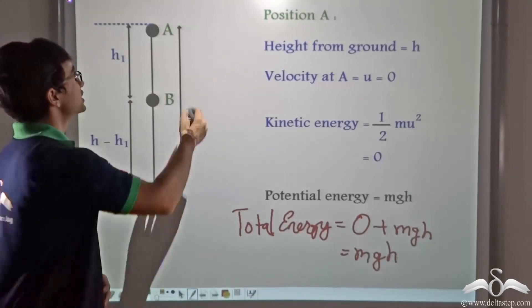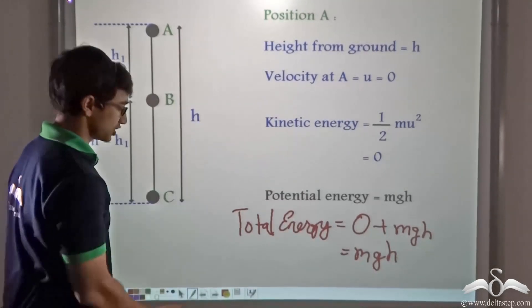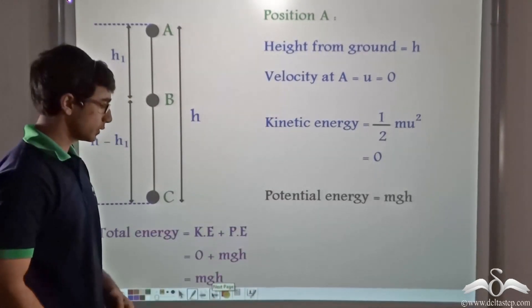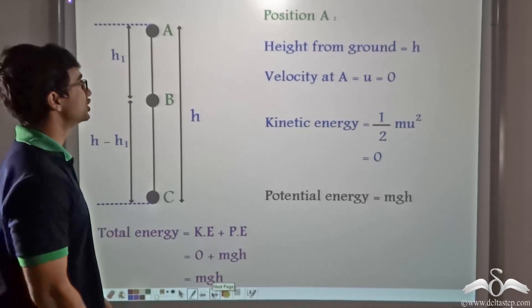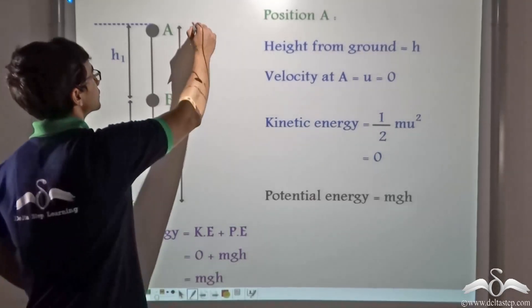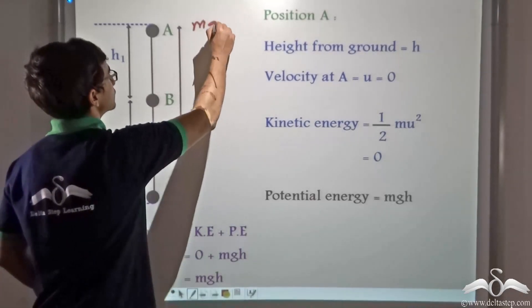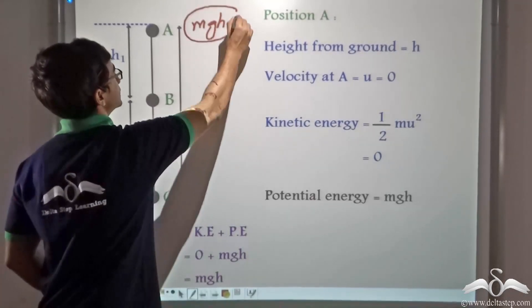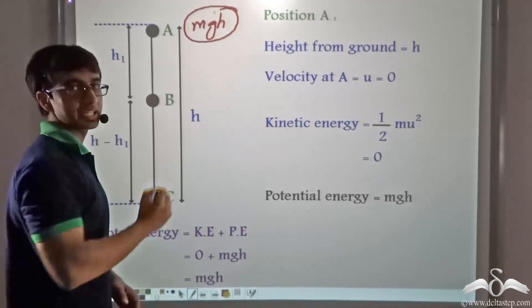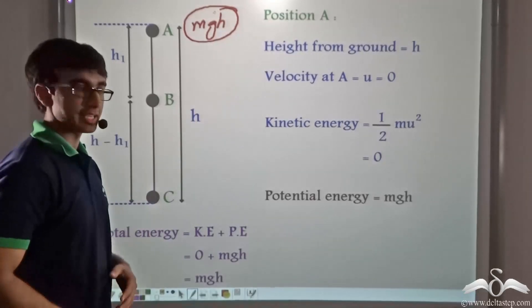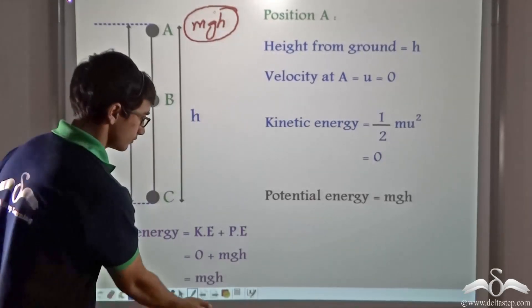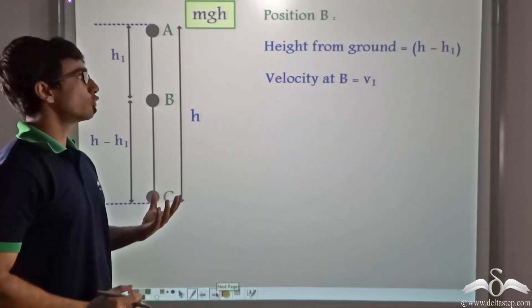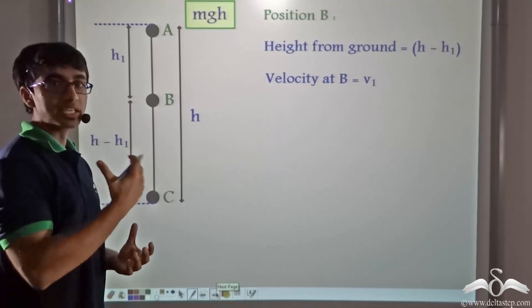So the total energy at position A is equal to MGH. Thus this is the total energy at position A. Now let us move on to position B.